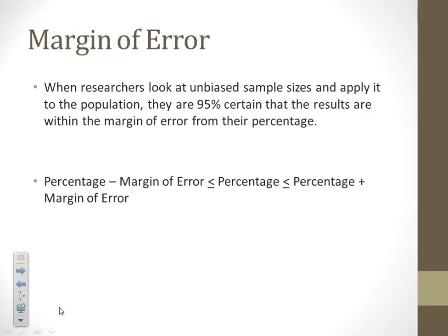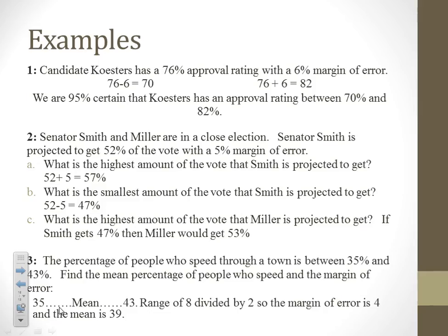They calculate it based on the number of people and that proportion. It also means we are only 95% certain — not 100% certain — that the results are between that range. We take the percent, subtract the margin of error, and add the margin of error, and that gives us our range. We are 95% confident that the actual results fall in that range.